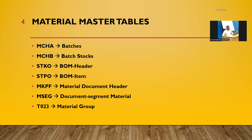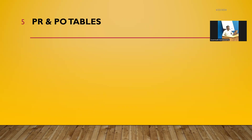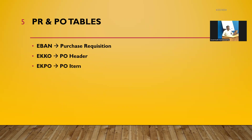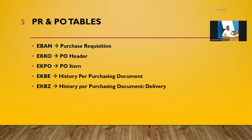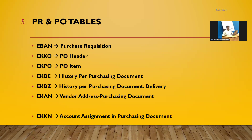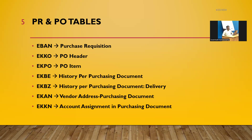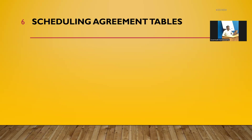T023: Material Groups. PR and PO tables: EBAN: Purchase Requisition. EKKO: PO Header. EKPO: PO Item. EKBE: History for Purchasing Document. EKBZ: History for Purchasing Document Delivery. EKAN: Vendor Address for Purchasing Document. EKKN: Account Assignment in Purchasing Document.